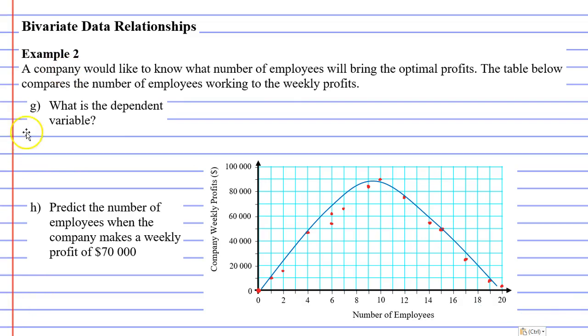Now looking at question G. What is the dependent variable? Dependent variable is always the variable on the vertical axis, which is our company weekly profit.